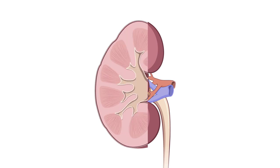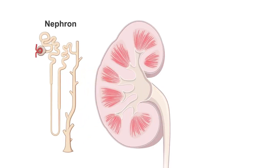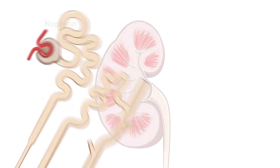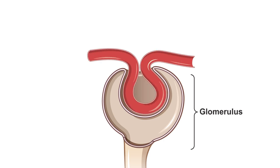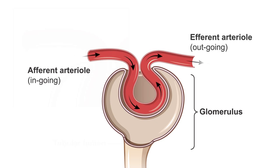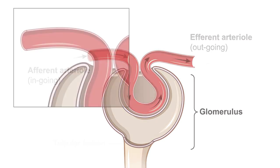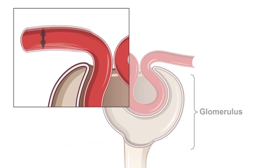Each kidney is made up of about one million filtering units called nephrons. The glomerulus is the portion of the nephron where filtering takes place. Blood flows into each glomerulus via an afferent arteriole and out via an efferent arteriole. The tone of these arterioles alters the pressure within each glomerulus and regulates filtration.